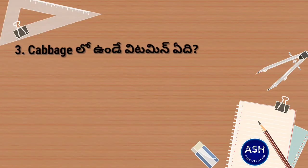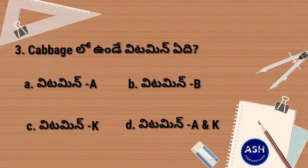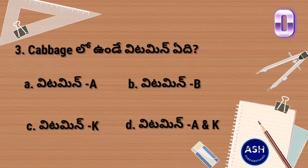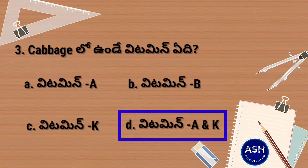There is vitamin A in cabbage. Option A: vitamin A. Option B: vitamin B. Option C: vitamin K. Option D: vitamin A and vitamin K. Your time starts now. And the answer is option D, vitamin A and vitamin K.